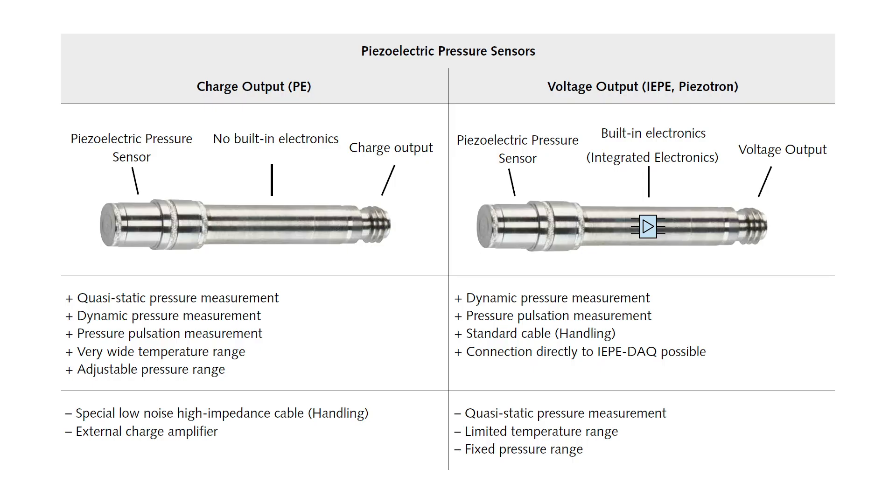As already mentioned earlier, piezoelectric pressure sensors are connected to a charge amplifier, which converts the charge generated by the sensor into a voltage signal. If the charge amplifier is an external device, it is referred to as a charge output or PE sensor.